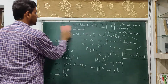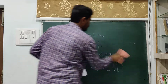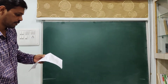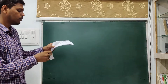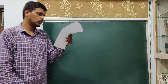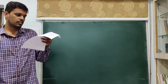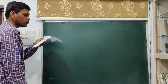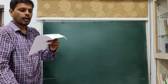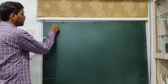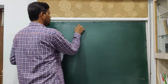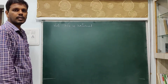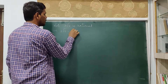Next, the fifth problem: we have to prove that 3√2 is an irrational number. I will be doing 3√2 as irrational; the sixth and seventh questions are similar to the fifth one. For that purpose, I will assume 3√2 is a rational number. If 3√2 is rational, you can express it in the form a by b, so that implies 3√2 equals a by b, where b is not equal to 0.